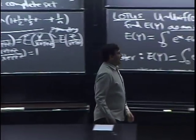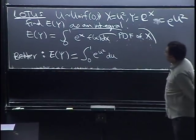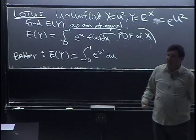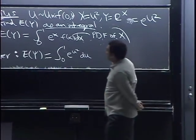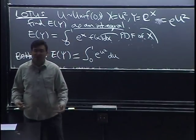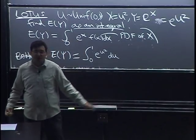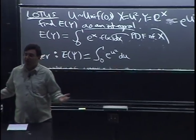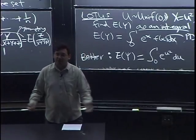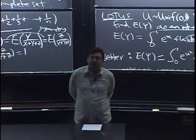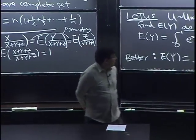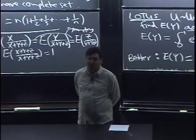Where you'd run into trouble is somehow mixing and matching these two things — like thinking that because we defined LOTUS and called our random variable X, the answer must involve X, and then getting confused when a LOTUS problem doesn't mention X. The important thing is the pattern, not what you call the variables. So anyway, that's just some comments about LOTUS.